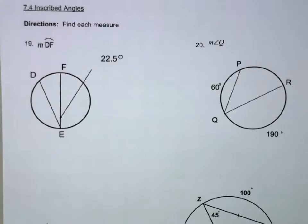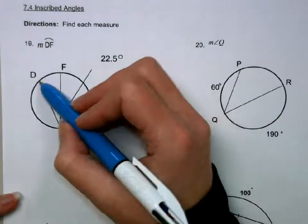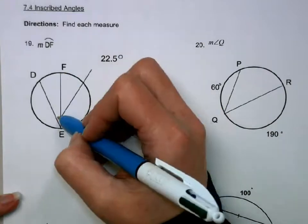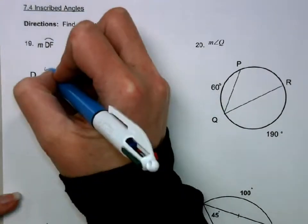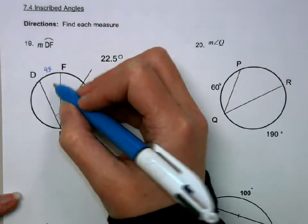Next, we have inscribed angles. Inscribed angles are going to equal half of the arc that they intercept. So if this is 22.5, this is going to be double that, or 45. Okay, so this angle is half, the arc is double.